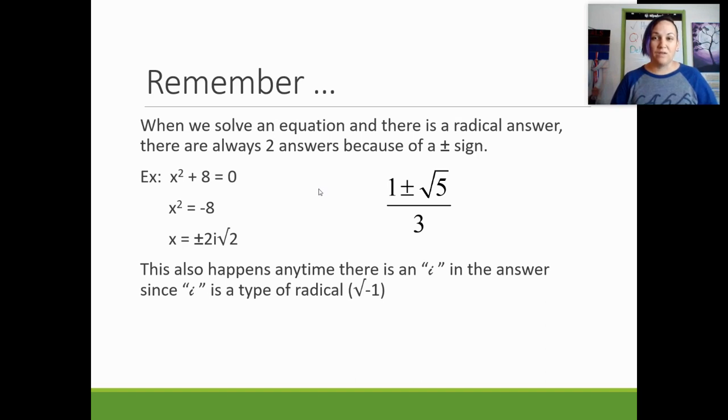So again, it's really important to know that any time you have a radical or an imaginary answer, they always have to come in pairs. Two of them. One positive, one negative. These are called conjugates.